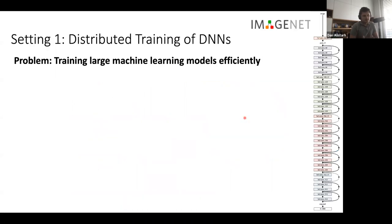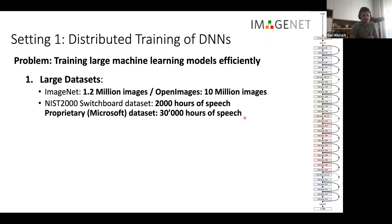The first real problem I'll address is training large machine learning models efficiently. A surprisingly high fraction of the world's compute is spent on this right now. To train an accurate image classification model you need millions to billions of images. For speech models, companies like Microsoft use at least tens of thousands of hours of speech — which is actually comparable to what a child hears until they start recognizing language.